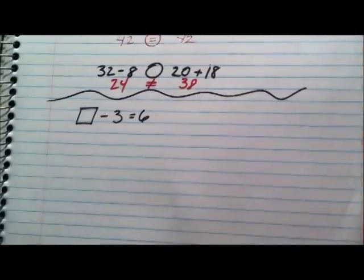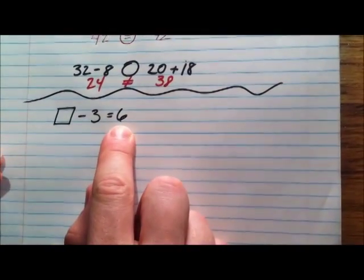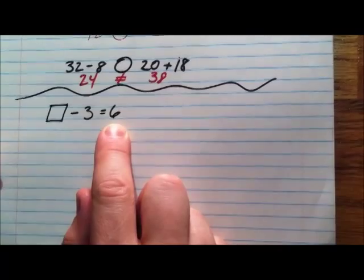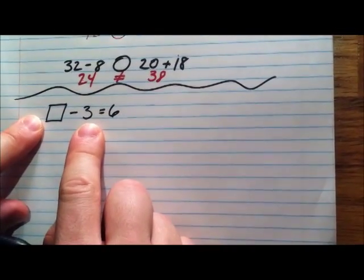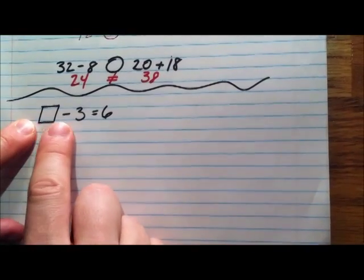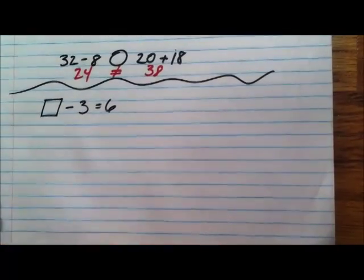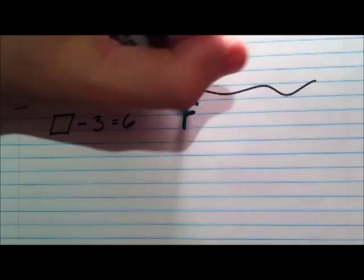So here's a different example of what you might be asked to do in terms of balancing an equation. On one side of our equal arm balance, we have a 6. And then over on this side, we have some kind of mystery number. We're not sure what it is. But it's going to be some number minus 3 is 6. So I'm going to show you how to go about solving this type of problem. In this problem, what we're going to use is a fact family.